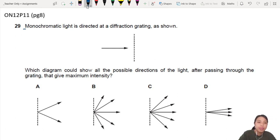So let's see monochromatic light, single color, at a diffraction grating. Which diagram shows all the possible directions of light after passing through the grating that give maximum intensity? So maximum intensity is referring to your maxima or where constructive interference occurs.